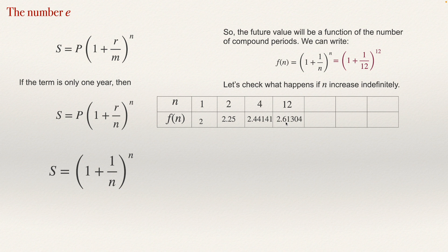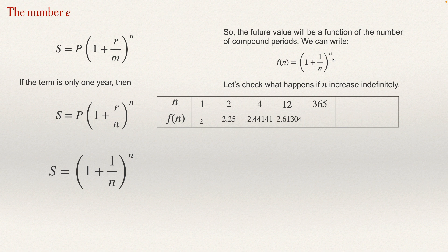Let's see if it compounds every day — 365 times in a normal year. So n equals 365, giving (1 + 1/365)^365. Using a calculator, the answer is 2.71457. The increase was only about one hundredth this time, so the increase is not so big now.